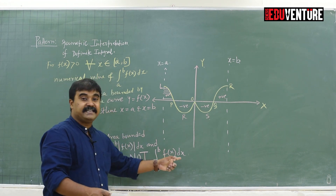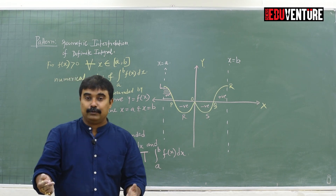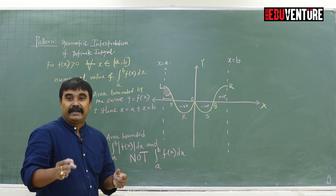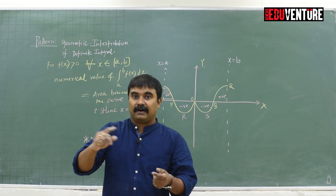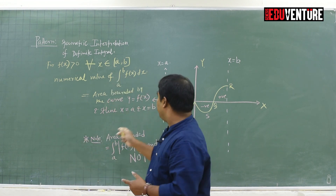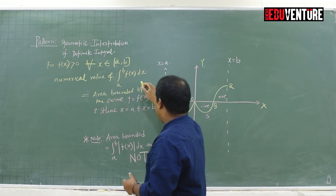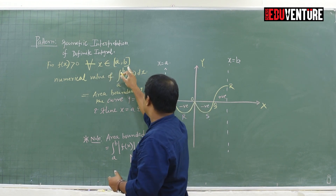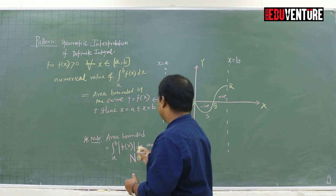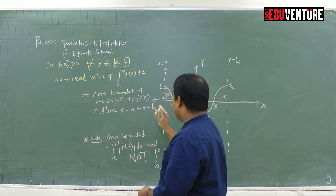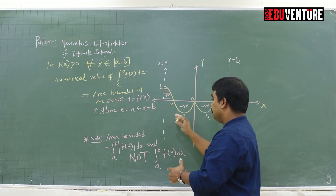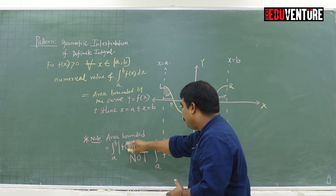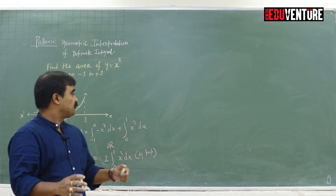The integral from a to b of f(x) dx is only the computed value of the definite integration within the boundary. So what we have learnt is that for any continuous curve within a bounded region, if there are two real numbers a and b in the closed interval and f(x) > 0, then the area bounded by the curve is the modulus value — the numerical value — within the boundary.